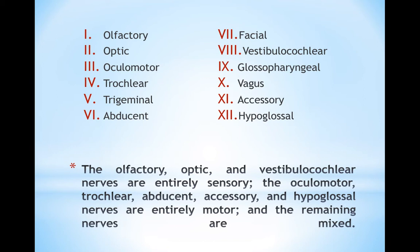So, there are olfactory, optic, oculomotor, trochlear, trigeminal, abducent, facial, vestibulocochlear, glossopharyngeal, vagus, accessory, and hypoglossal nerve. While the rest of the cranial nerves are mixed nerves.